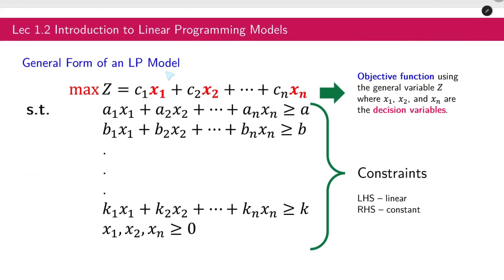This is the general form of an LP model. First, you have the objective function. As you can see, at the beginning is your objective, Maximize. And then the capital Z, that is the representation of the cost or the profit. In this case, this one represents the profit. This one is equal to c1x1 plus c2x2 plus until cnxn. Take note that x1, x2 until x sub n are the decision variables.